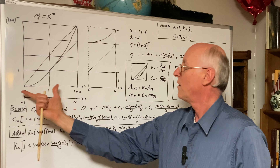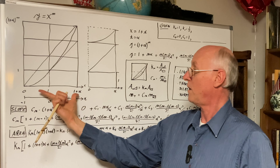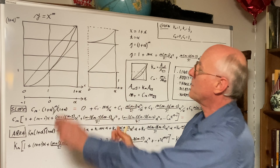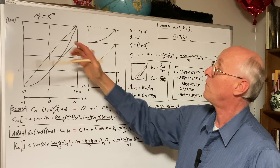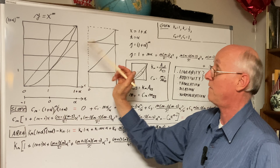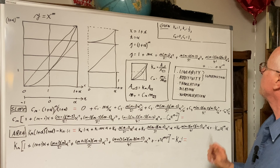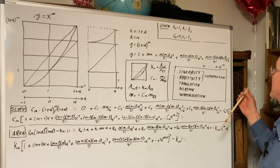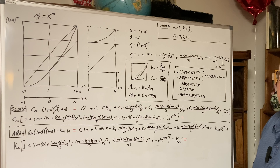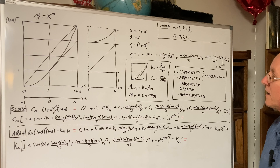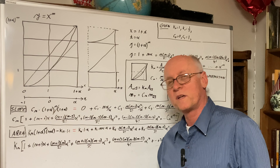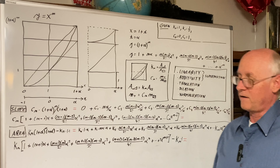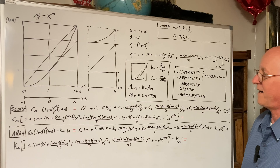That's our rise, and 1 plus alpha is the run. The box would be 1 plus alpha to the n times 1 plus alpha, and the diagonal would be 1 plus alpha to the n divided by 1 plus alpha. We are using Wahlberger's properties: linearity, additivity, translation, dilation, normalization, and superposition. We're looking at area and slope together — in one video it may be busy, but it's worthwhile.